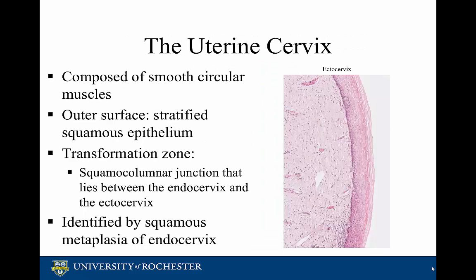The uterine cervix, or the lower part of the uterus, is composed of smooth circular muscles. The cervix consists of the ectocervix, the endocervix, and the transformation zone, which is the squamous columnar junction between the endocervix and the ectocervix.